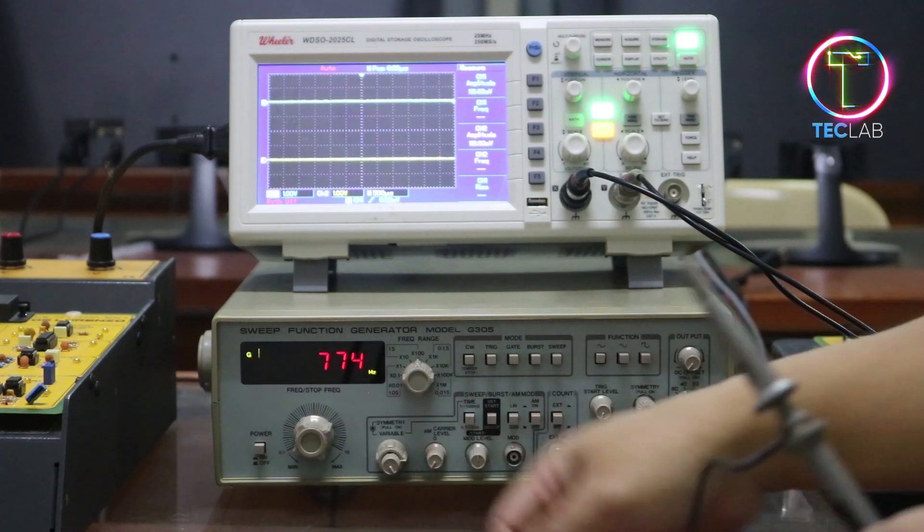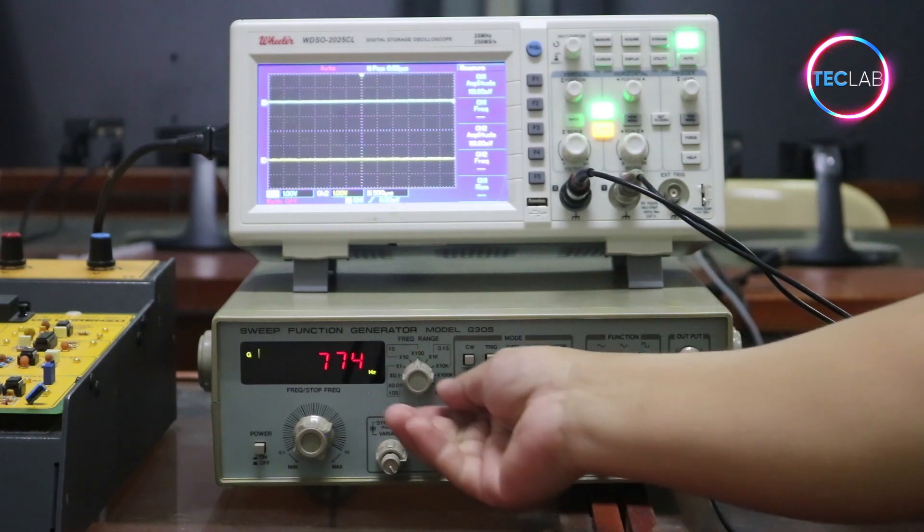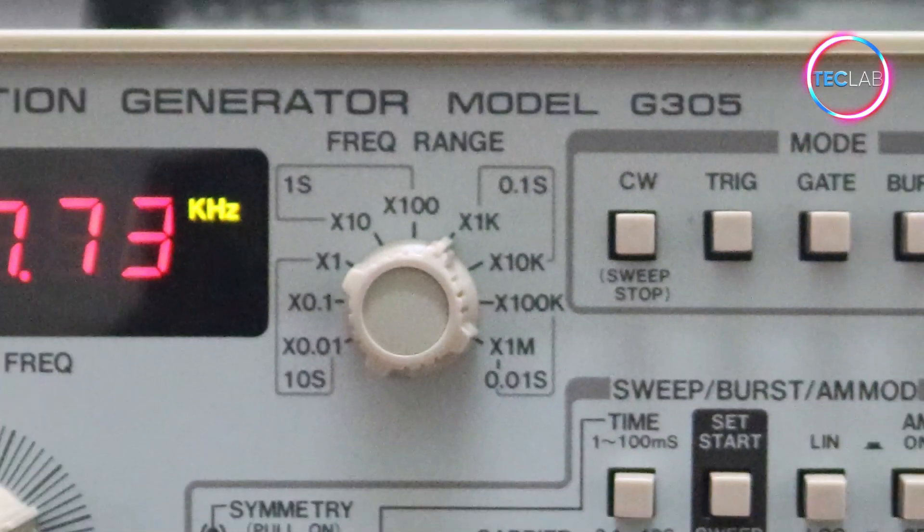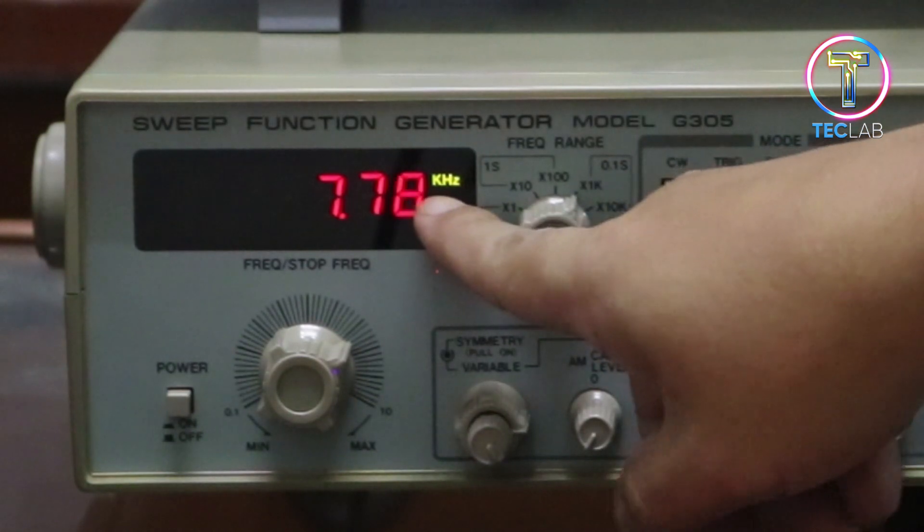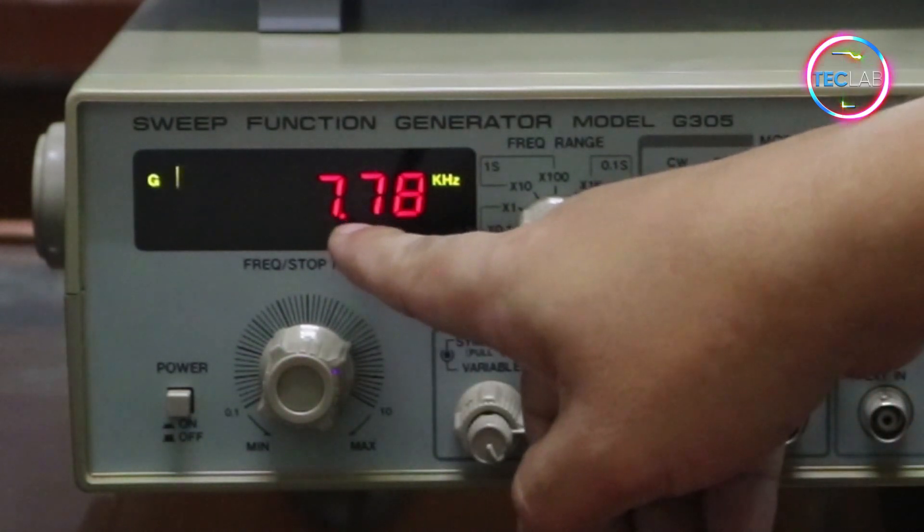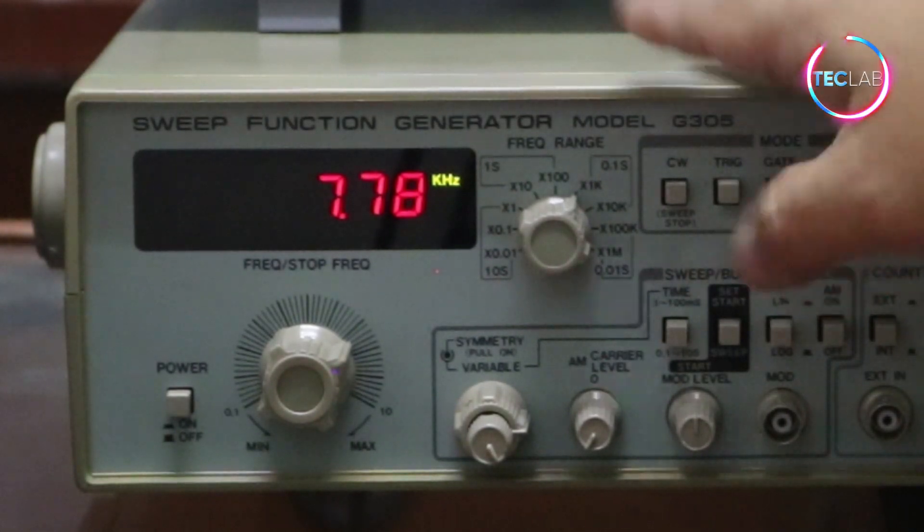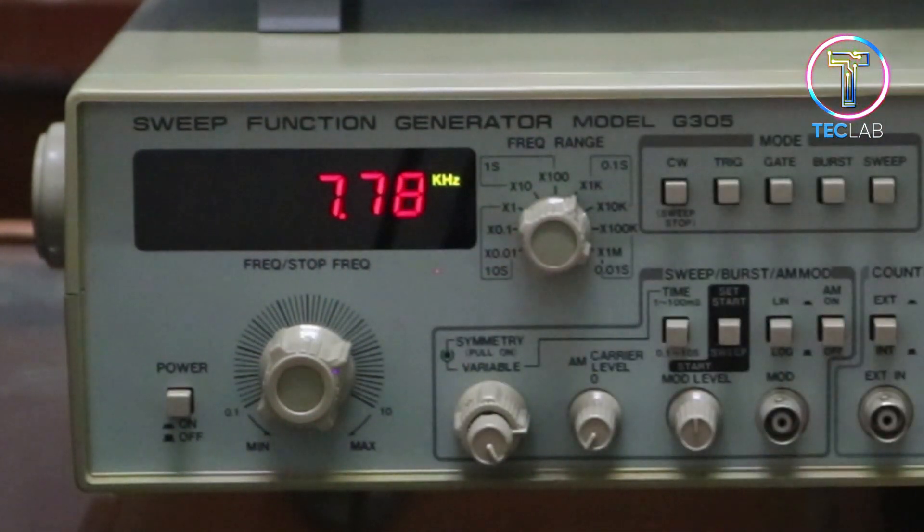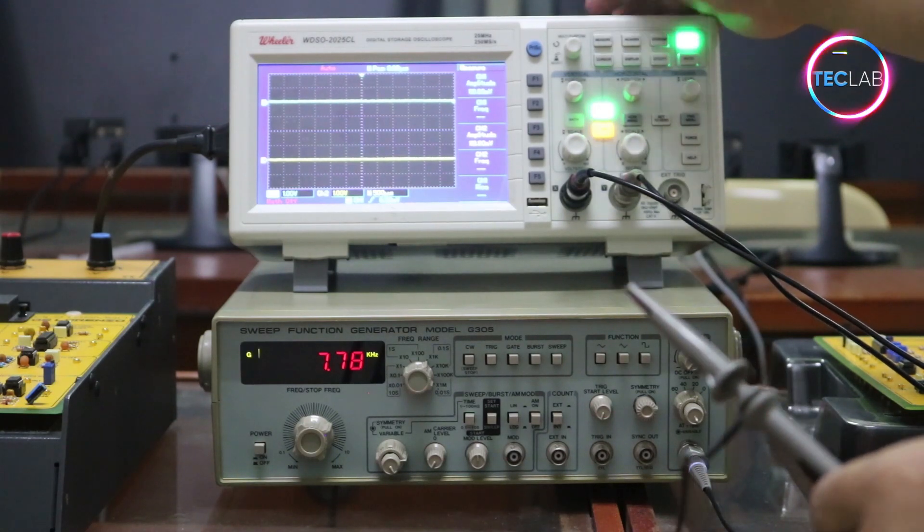For the frequency that is larger, in the kilohertz range, you can select this button or this knob into kilohertz range. As you can see here, there is a kilohertz range. The signal currently generated by this function generator is about 7.76 kilohertz. I will verify the signal if it is 7.76 kilohertz using the calibrated oscilloscope.